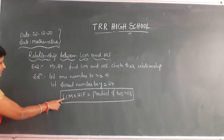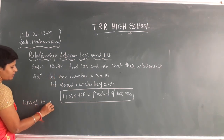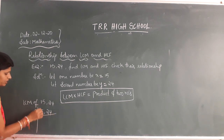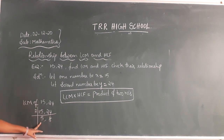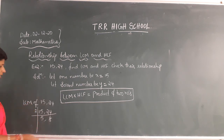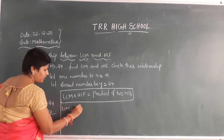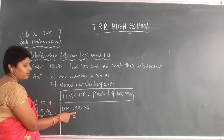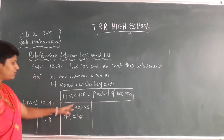Now find the LCM of 15 and 44 using the division method. Take 3: 3 fives are 15, 3 eights are... wait, 44 is not divisible by 3. Since 5 is a prime number and 8 is composite, and these 2 numbers are not both divisible by the same number, we stop here. So LCM is equal to 3 × 5 × 8. 8 fives are 40, so LCM is 120.